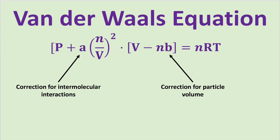Based on these deviations, van der Waals suggested correction factors to the ideal gas equation to include the effect of intermolecular size and intermolecular forces. This equation is known as the van der Waals equation, where the terms A and B are constants that depend and differ between gases.